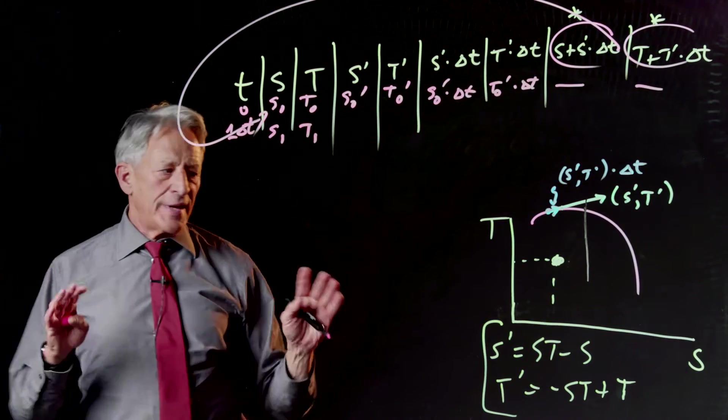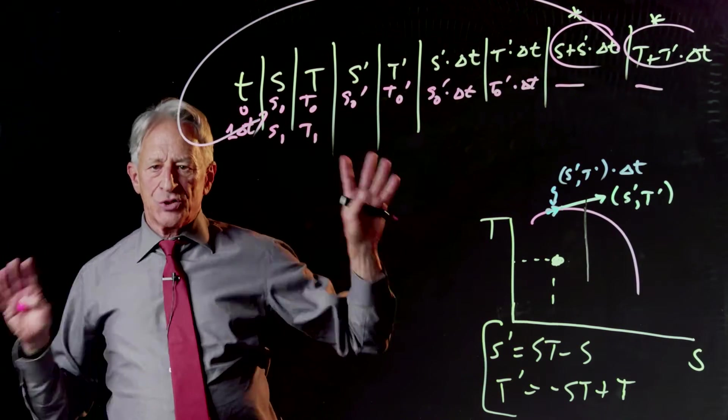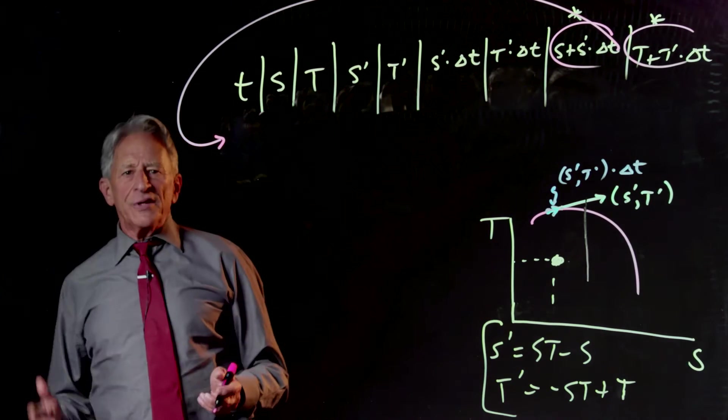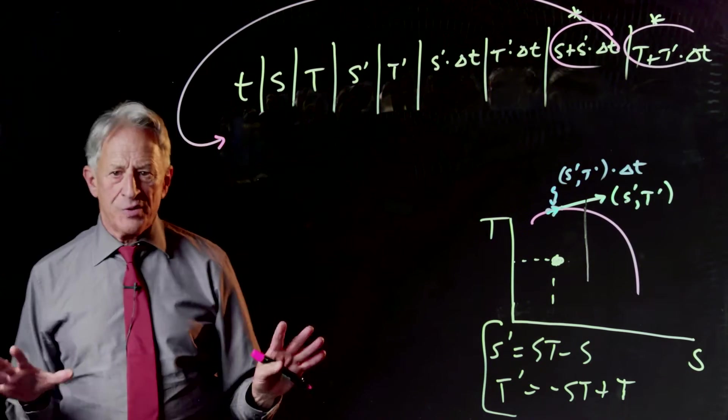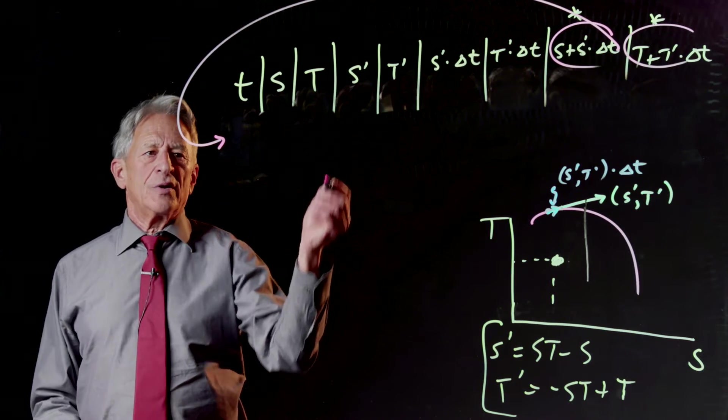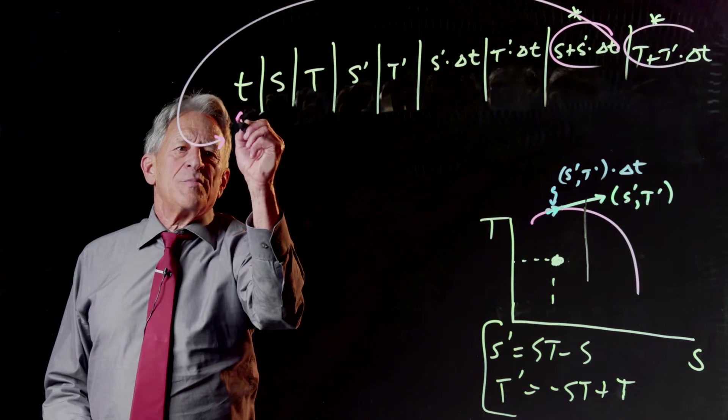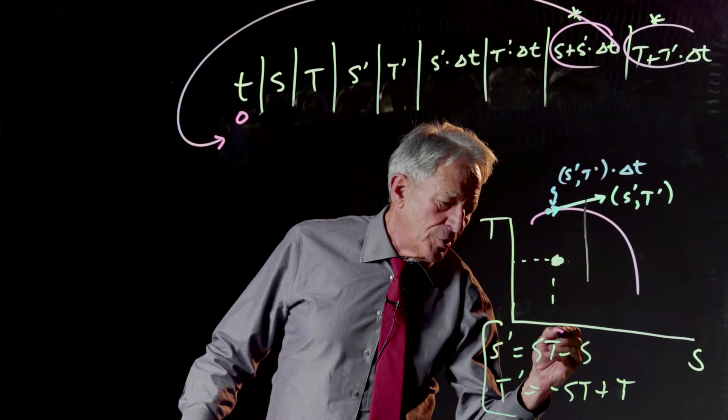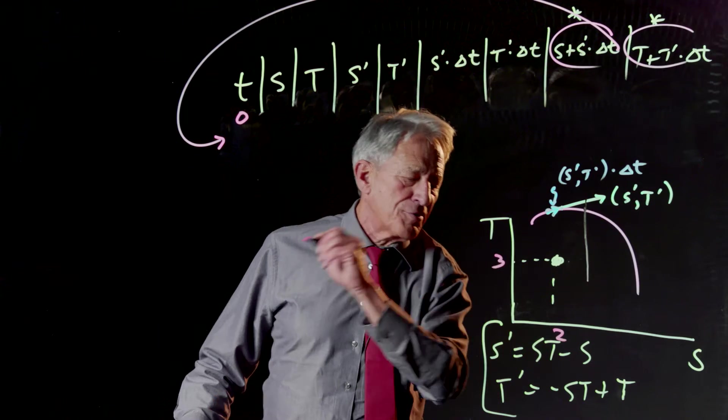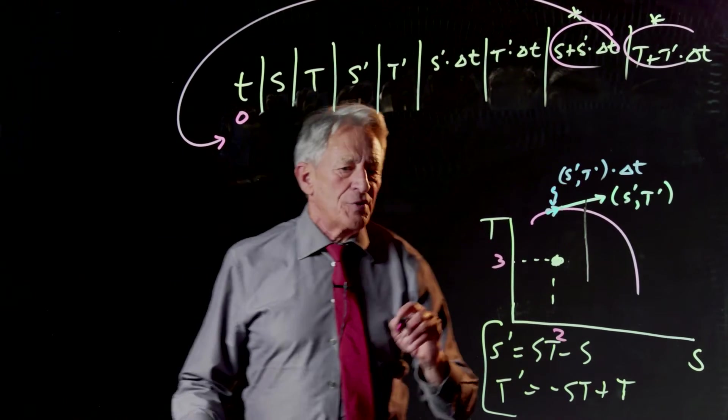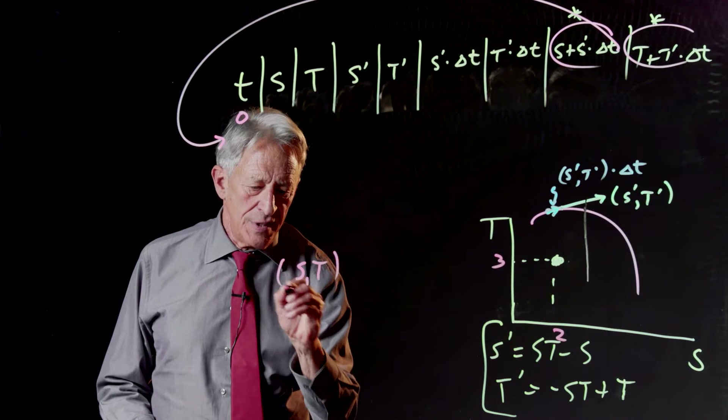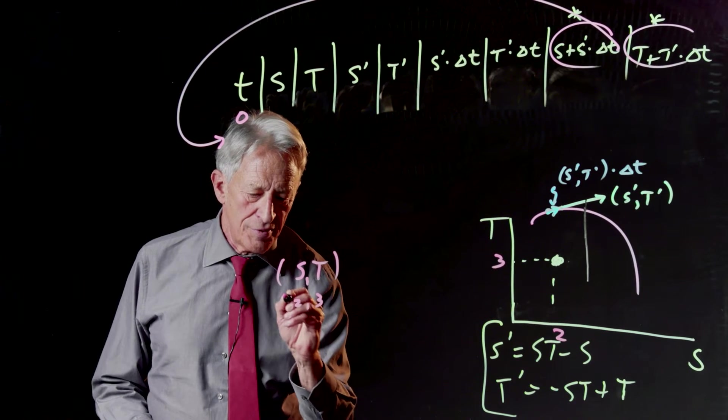So let's do that with actual numbers just to make sure we understand what's going on here. At time 0, I'm going to start from the point 2 comma 3. So that's s t is 2, 3.